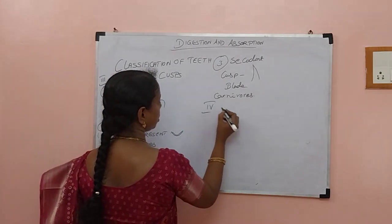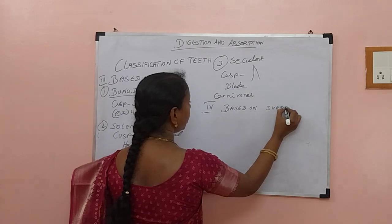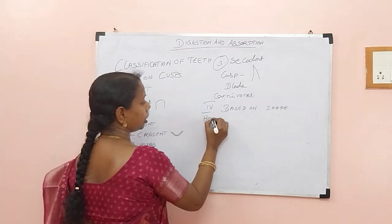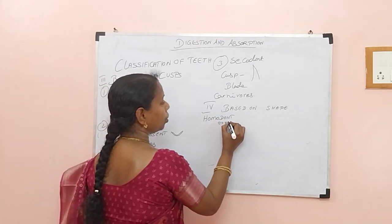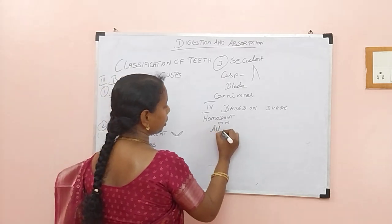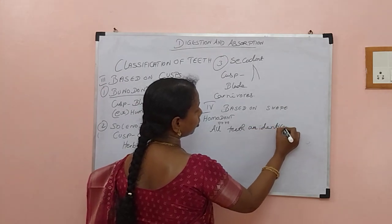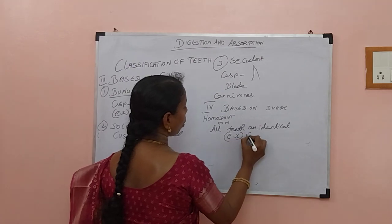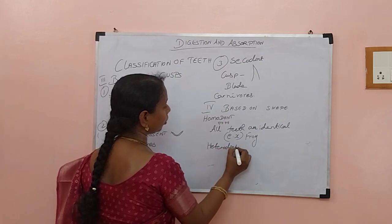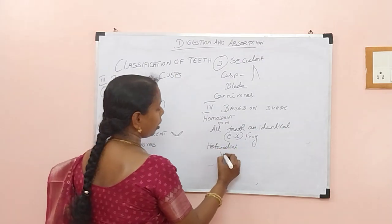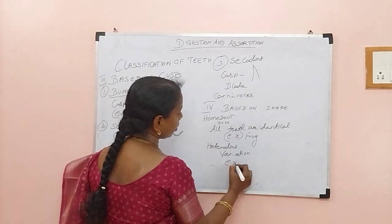Classification is also based on shape. If all teeth are almost the same, then we consider that as homodont. For example, frog teeth are all triangular in shape — no variation in shape, all teeth are identical. In heterodont, variations are there. For example, we have incisors, canines, premolars, molars — all these different types. So the example is humans.